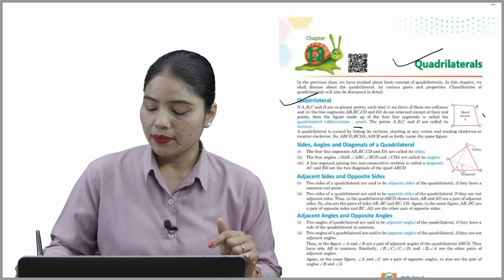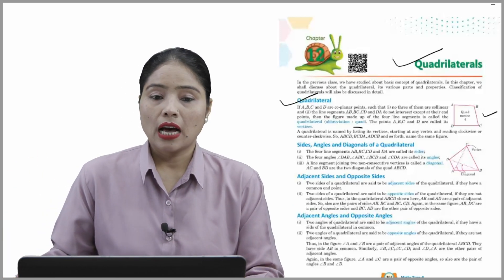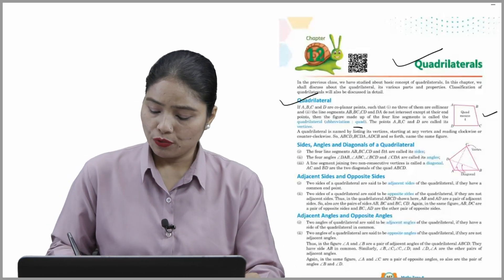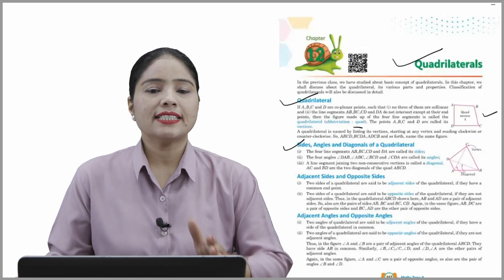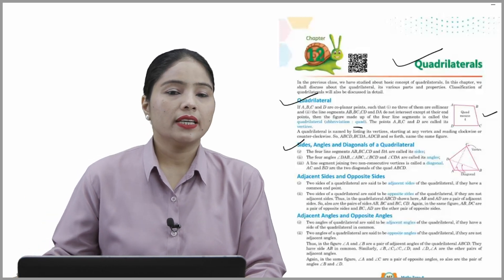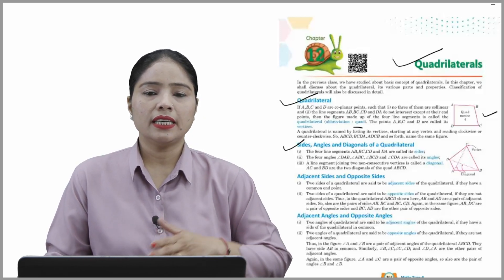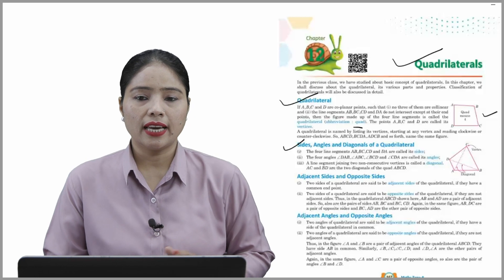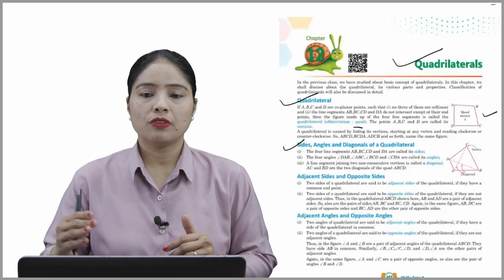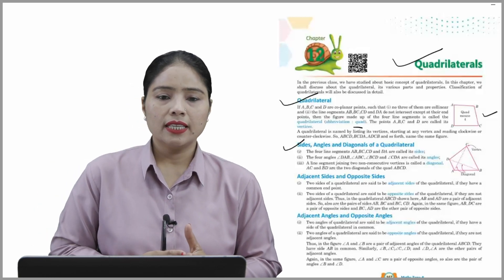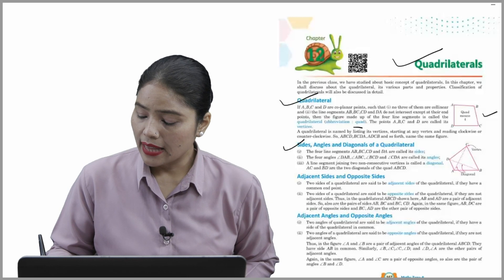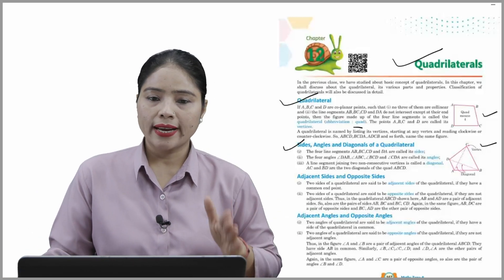Here is the diagram of a quadrilateral. Now, sides, angles, and diagonals of a quadrilateral: first, the four line segments AB, BC, CD, and DA are called its sides. Second, the four angles — angle DAB, angle ABC, angle BCD, and angle CDA — are called its angles. A line segment joining two non-consecutive vertices is called a diagonal. AC and BD are the two diagonals of quadrilateral ABCD.